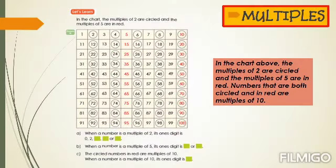Look at the slide now. Let us learn more about multiples. You see here in the chart, the multiples of 2 are circled and the multiples of 5 are in red. The numbers that are both circled and in red are multiples of 10. Let us read the numbers in circles.